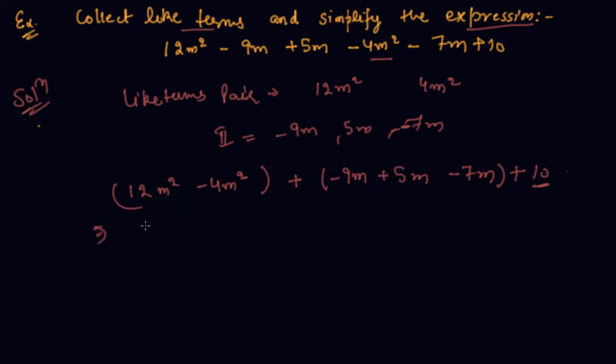So what I will do now is I will take m² common, this is 12 - 4. This is m common, -9 + 5 - 7 + 10. So what I will get here is 8m²... this was 7 students, okay... 15... 5 minus 11m + 10.